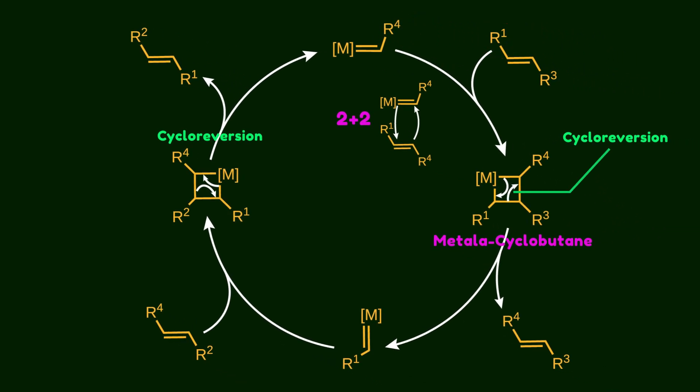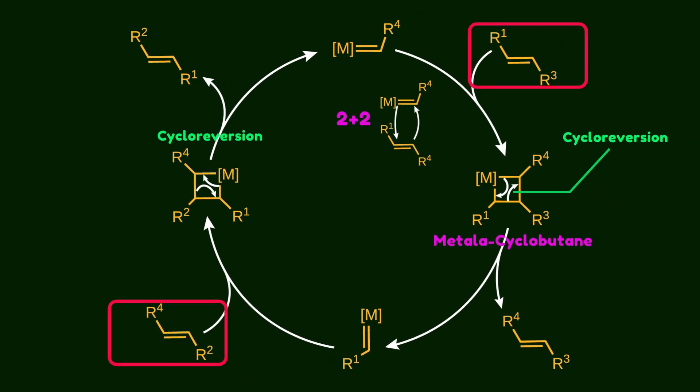If we look at the whole reaction, two alkenes enter the catalytic cycle and interact with the catalyst. The outcome is that the R1 substituent is transferred onto the second olefin, and R4 is transferred from the catalyst to the first olefin.